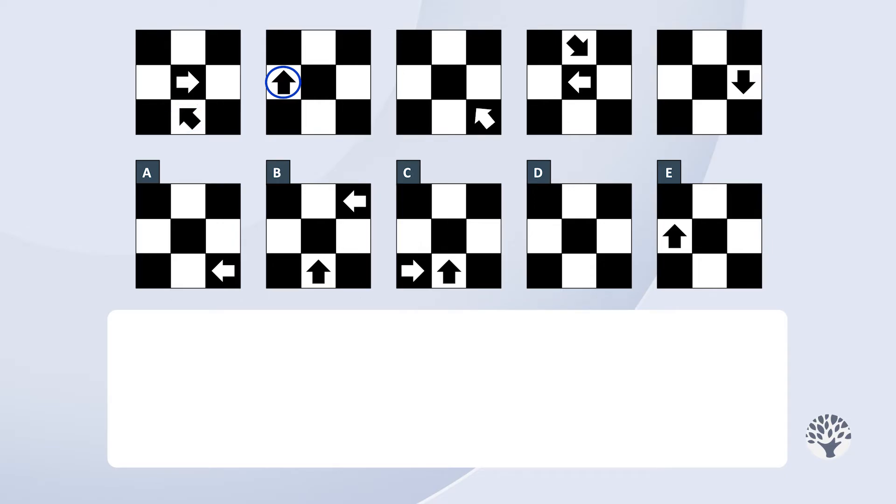In frame two it points up to the black square in the top left. That dynamic suggests that the arrows indicate their own future position but also the fact that if they land on a square that's the same colour as they are they become invisible.